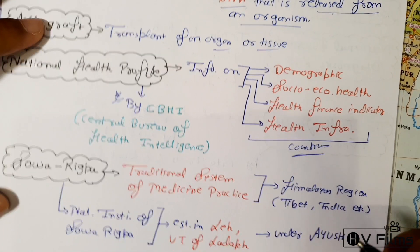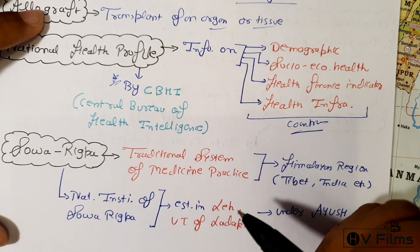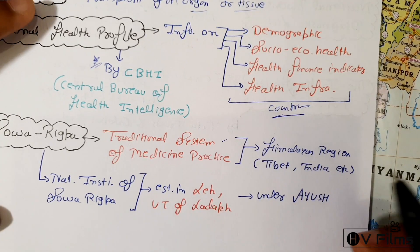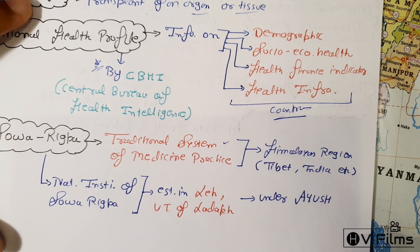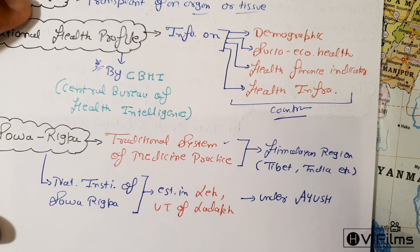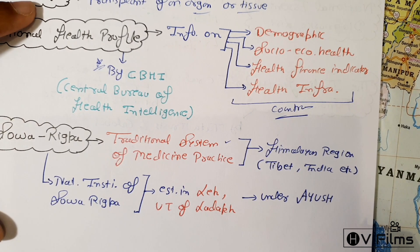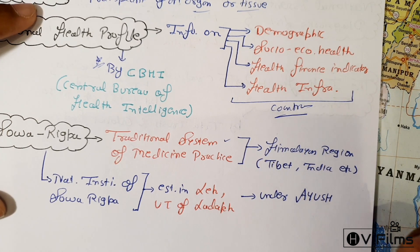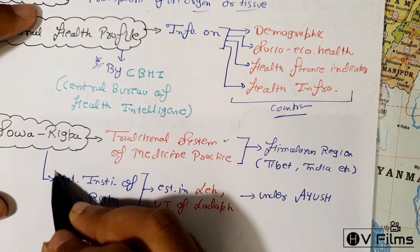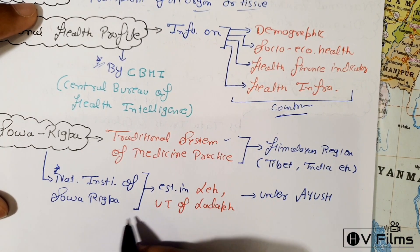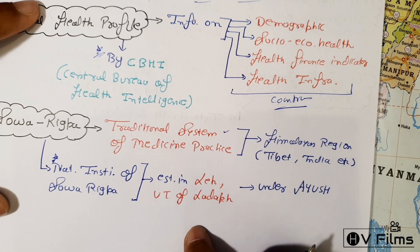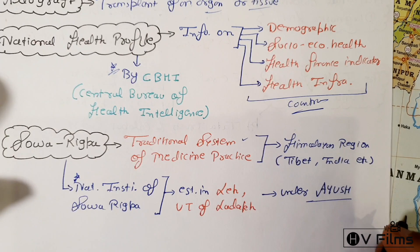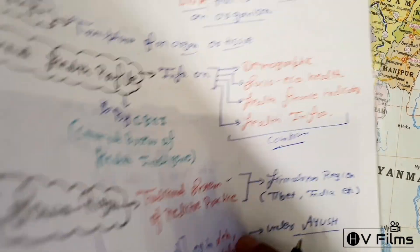Sowa Rigpa is a traditional system of medicine practiced in the Himalayan regions of Tibet, Nepal, and Mongolia. India has a National Institute of Sowa Rigpa established in Leh, in the Union Territory of Ladakh, under the AYUSH Ministry.